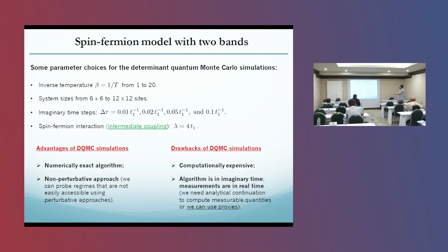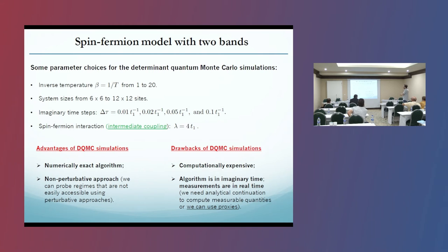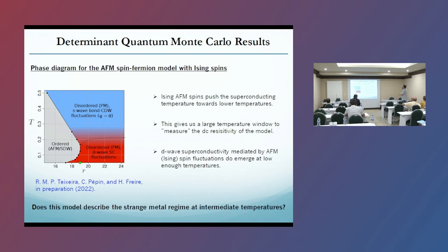Some advantages of quantum Monte Carlo simulations: it is a numerically exact algorithm and completely non-perturbative, meaning we can probe regimes not easily accessible using perturbative approaches. Some drawbacks: it is extremely computationally expensive, and the algorithm works in imaginary time while measurements are in real time, so we either need analytical continuation — which is an ill-conditioned problem numerically — or we can use some proxies to calculate certain quantities.